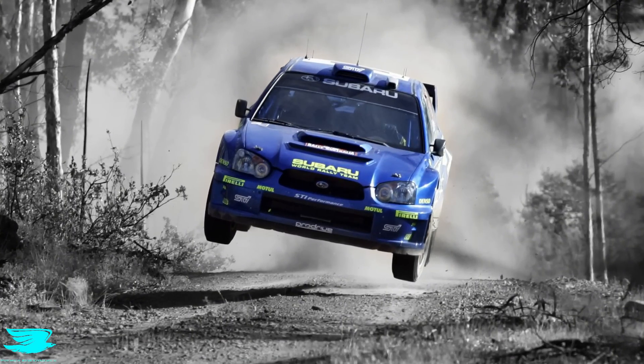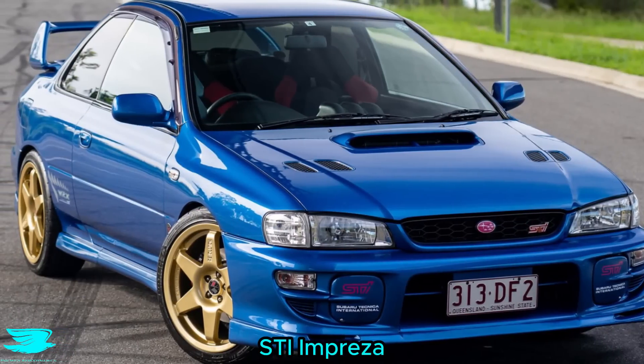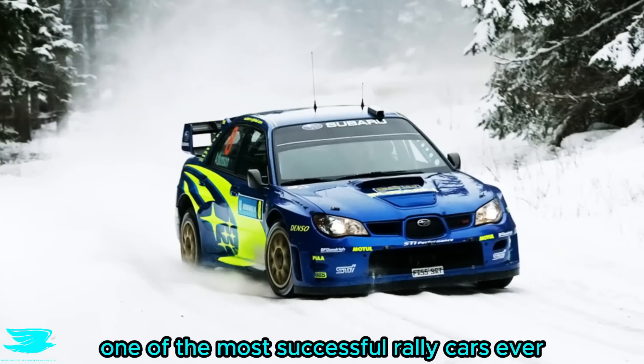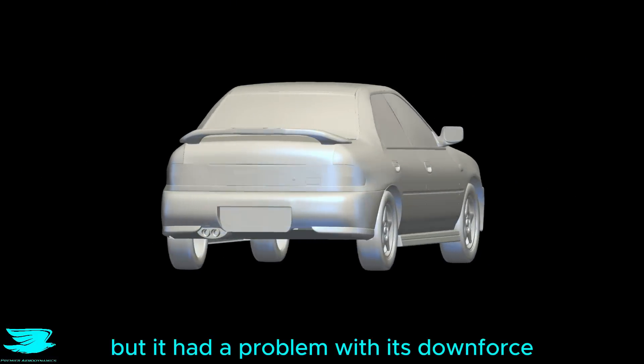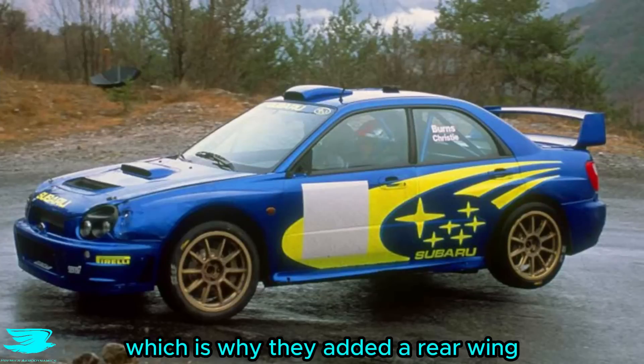This is the aerodynamics of the 1996 Subaru WRX STI Impreza, one of the most successful rally cars ever. And it was a supercar for yobs, one of my friends had one. But it had a problem with its downforce, which is why they added a rear wing.